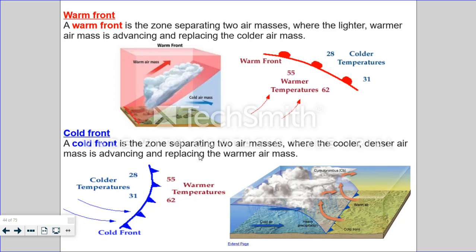A cold front is the zone separating two air masses, where the cooler, denser air mass is advancing and replacing the warmer air mass. Here you see these colder temperatures are replacing these warmer temperatures. A cold front is depicted by a blue line with dark blue triangles. And here this cold front is moving in a southeast direction.